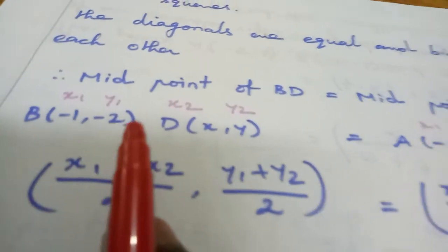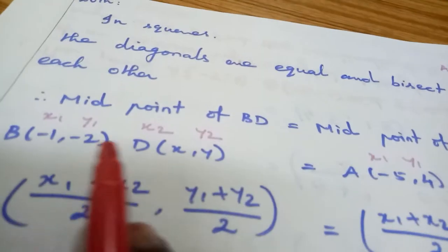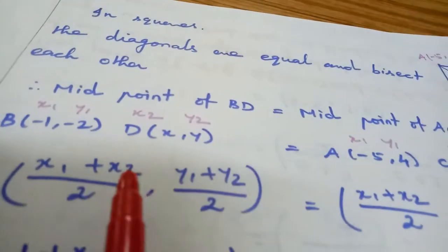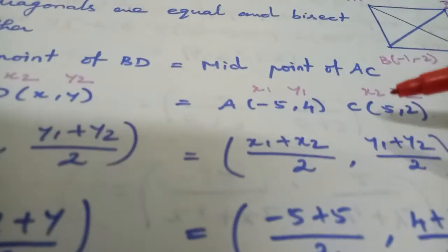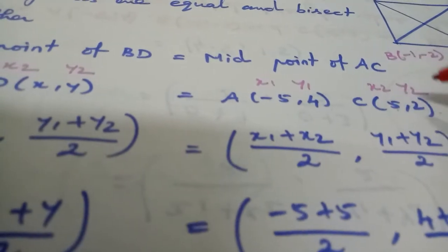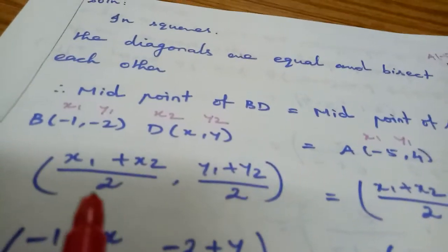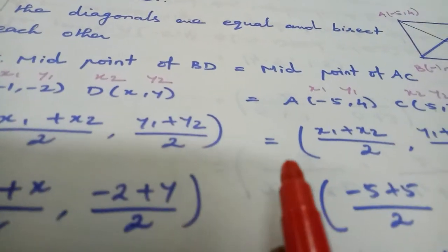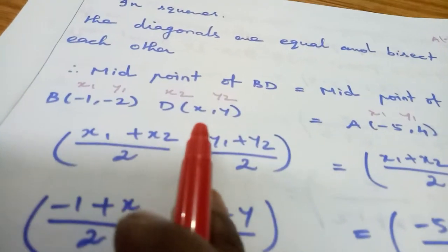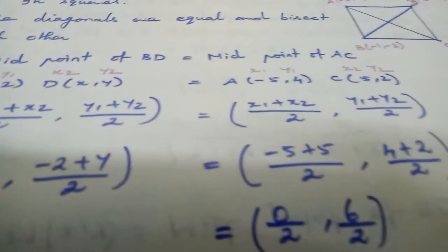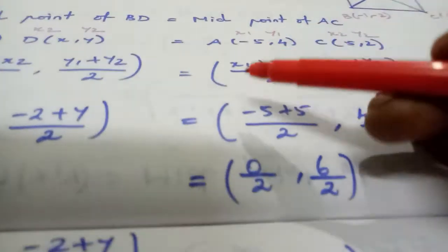Let D be (x,y). B is (-1,-2) and D is (x,y). A is (-5,4) and C is (5,2). Using midpoint formula: (-1+x)/2, (-2+y)/2 equals (-5+5)/2, (4+2)/2. This gives us (-1+x)/2, (-2+y)/2 equals 0/2, 6/2, which is (0,3).